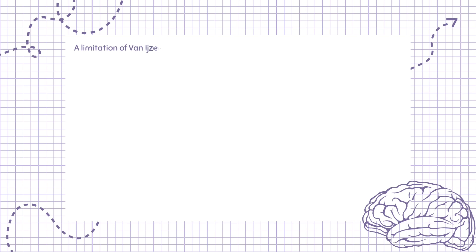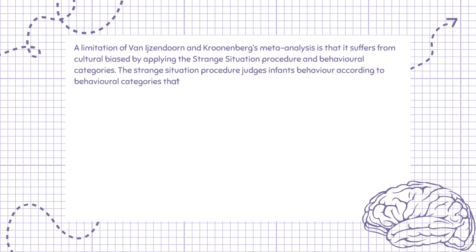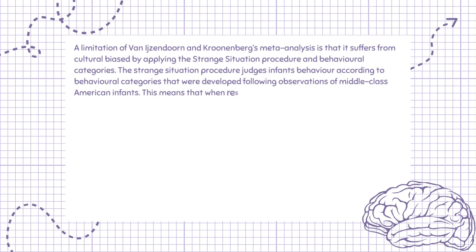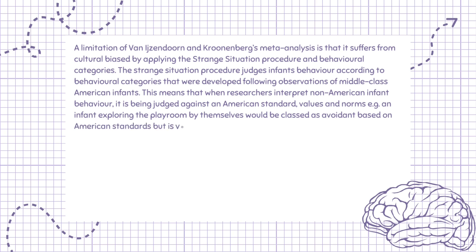A limitation of Van IJzendoorn and Kroonenberg's meta-analysis is that it suffers from cultural bias by applying the strange situation procedure and behavioral categories. The strange situation judges infants' behavior according to behavioral categories that were developed following observations of middle-class American infants. This means that when researchers interpret non-American infant behavior, it is being judged against American standards, values, and norms. For example, an infant exploring the playroom by themselves would be classed as avoidant based on American standards but is valued as reflecting independence in Germany.